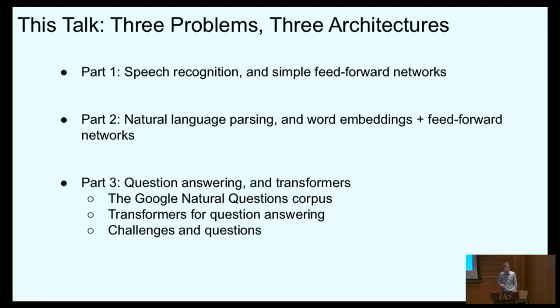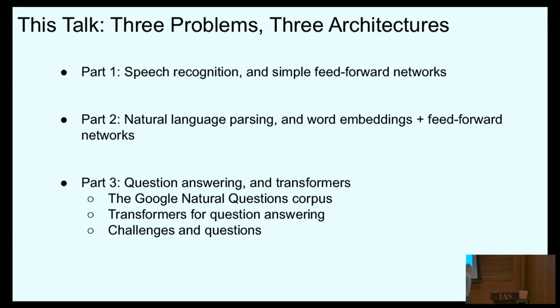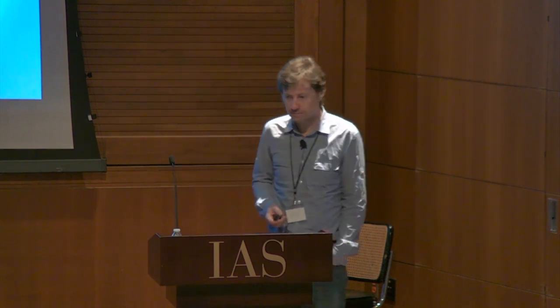To conclude: we've talked about three problems — speech recognition, parsing, and question answering — and three architectures. There are many theory-driven questions about how networks are learning and generalizing effectively in these domains. But also, I think there are critical questions of how we can build neural models that explicitly reason and provide evidence for their answers — for example in question answering — and use common sense semantics and pragmatics in a less opaque way that humans can understand. Thanks a lot.